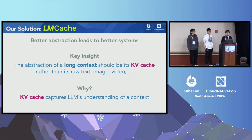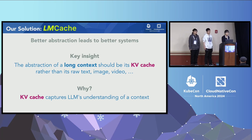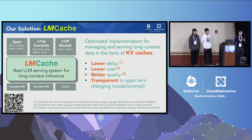What is KV cache? KV cache is the internal understanding of the large language model on the long-context data. You feed the long-context data to the model once, and the model creates this internal understanding — the KV cache. If you use KV cache as a representation of the long context, the model can use it and understand it directly. That's the high-level reason why we focused on KV cache as the abstraction for long-context service.